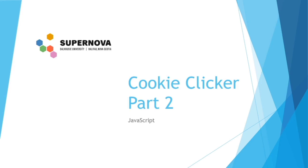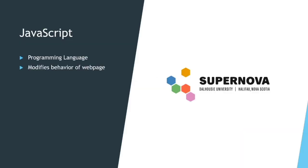In the last video we learned about HTML and how HTML can create the structure of our web page. In today's video we'll be using JavaScript to create and add behaviors to our website. The interaction we'll be creating is whenever we click on the image of a cookie, the cookie clicker will increment by one.